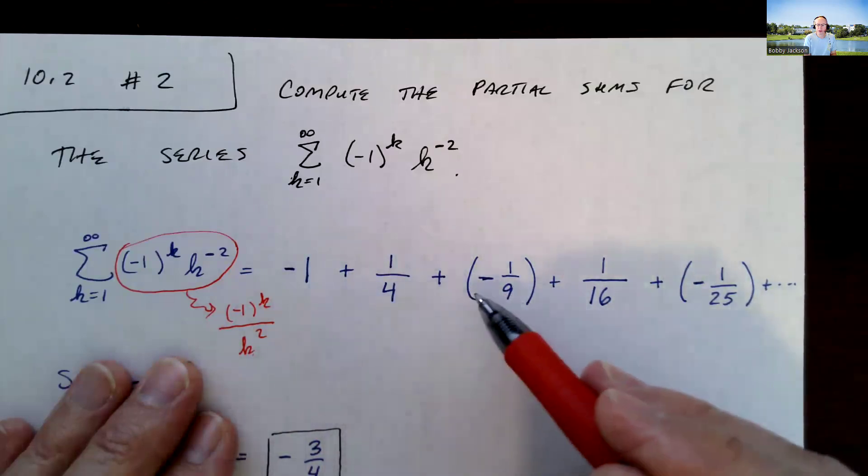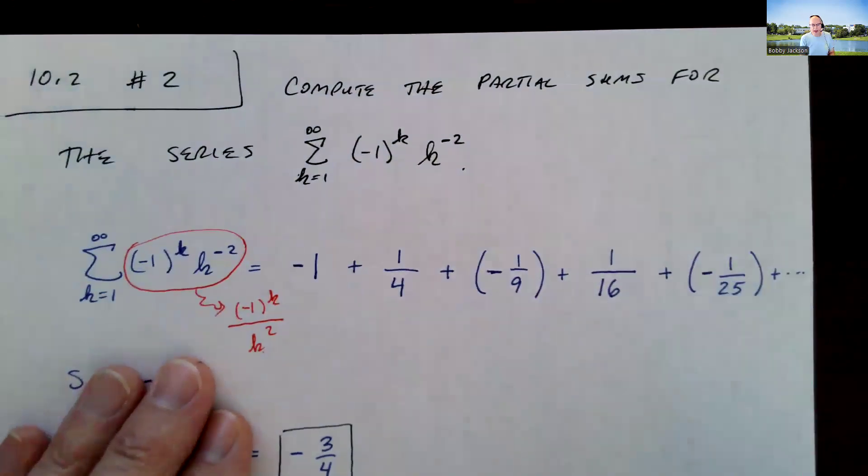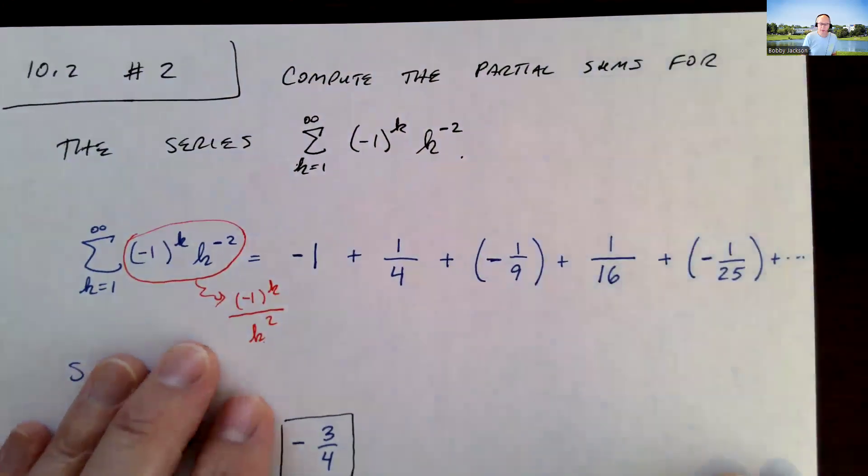So notice it's just alternating between negative and positive. And so these are the terms that we're adding up. These are the a sub k's.